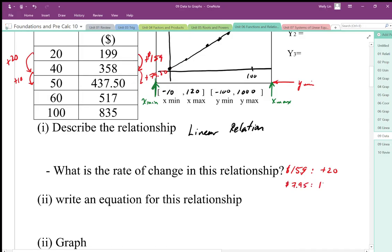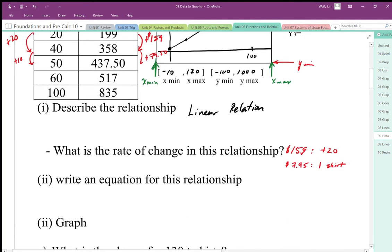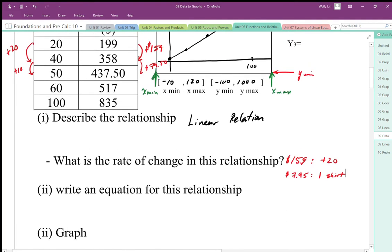So for 10 shirts I get an extra charge of plus 79 dollars and 50 cents. So this is my rate of change, and I find my rate of change on the outside of the function.